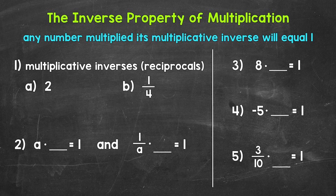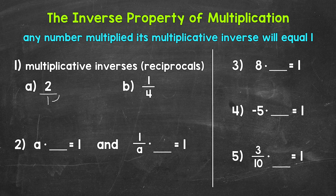Let's jump into number 1 and take a look at what multiplicative inverses, also known as reciprocals, are — starting with A, where we have 2. The multiplicative inverse or reciprocal of 2 is what we can multiply 2 by to equal 1. I'm going to rewrite 2 in fractional form. We can write any whole number in fractional form by putting it over 1. Then we flip that fraction to get the multiplicative inverse — the denominator becomes the numerator.